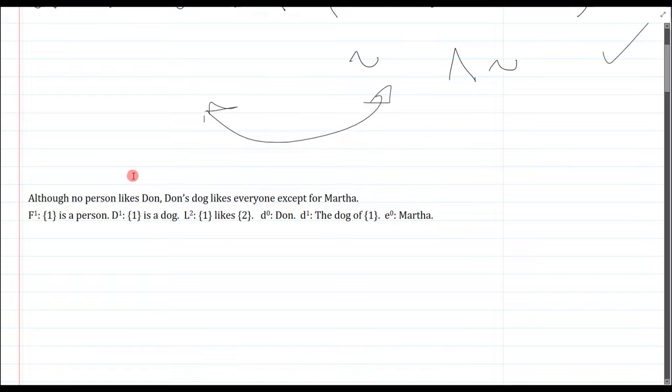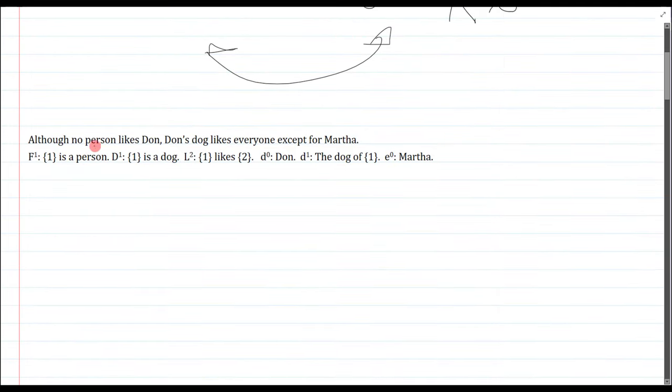Okay next question. Although no person likes Don, Don's dog likes everyone except for Martha. So I have this comma and of course we know this comma is paired with although, so most likely the main connective is just and here. Anyway we could just start.